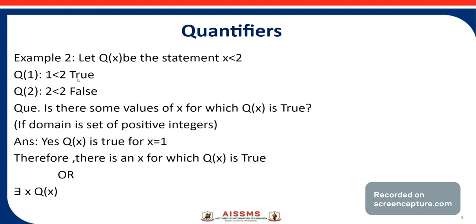Here, some values are true and some are false. So we can say there exists an x for which q(x) is true, or there exist values of x such that q(x) is true. If the domain is the set of positive integers, then this statement holds true.